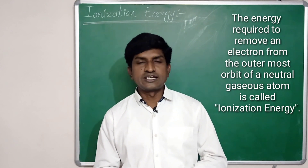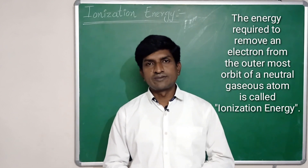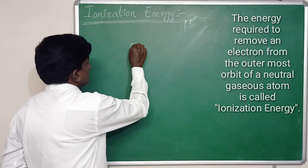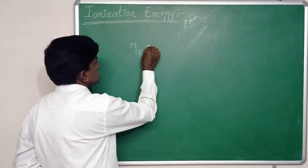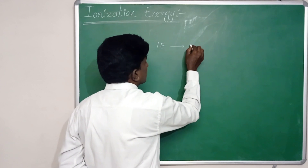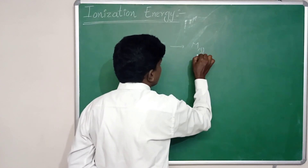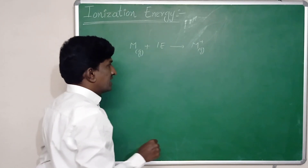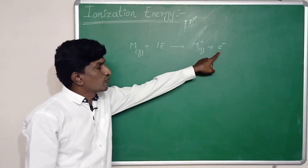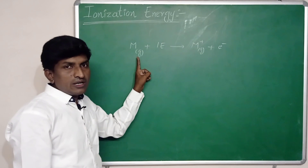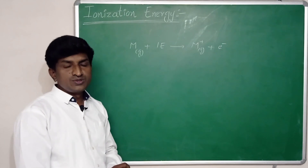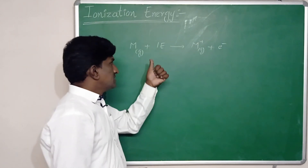For example, let us take an atom in gaseous state. Ionization energy is the energy required to remove one electron from its gaseous state. If we remove one electron, it converts into a cation and one electron comes out. So the energy required to remove one electron from its outermost orbit of the atom is ionization energy.